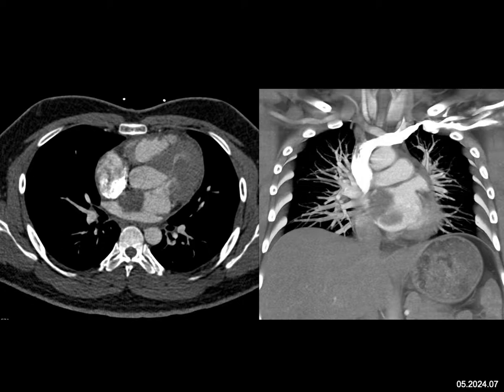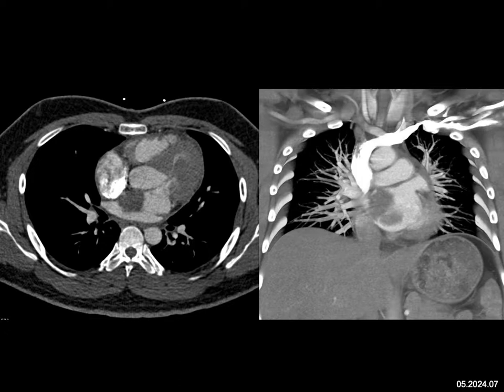Lymphoma typically involves the pericardium and can involve the chambers of the heart by direct extension and infiltration, which you don't see here. This is surely not simply a flow-related artifact. This is a very nice example of an atrial myxoma. Atrial myxomas can calcify, and at times it can be a real challenge differentiating an atrial myxoma from a thrombus.